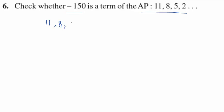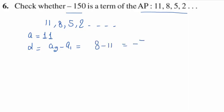We are given the AP: 11, 8, 5, 2, and so on. So the first term a is 11. To find d, we use a2 minus a1, that is 8 minus 11, which gives minus 3. So the common difference d is minus 3. We need to check whether minus 150 is a term — if it is, n will be a natural number; otherwise it will give a fractional or negative value.